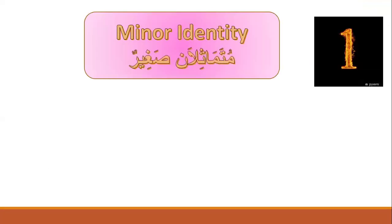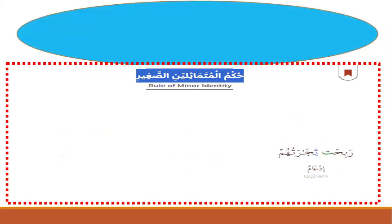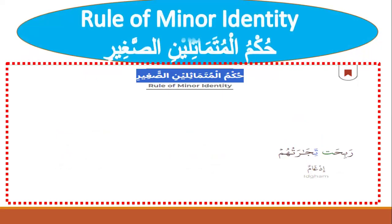Let's start with the first category: minor identity — mutamathilan صغير. The first letter is silent and the second letter has harakah. Examples include: ربيحة تدارتهم, اضرب بعصاك, and لكم ما سألتم. The rule of minor identity (حكم المتماثلين الصغير) is idgham.